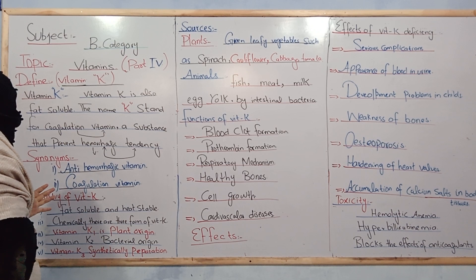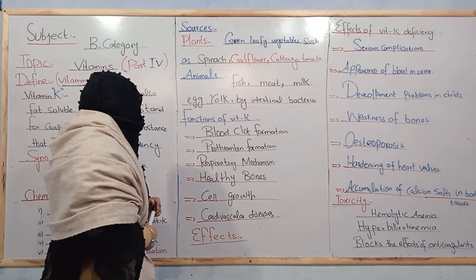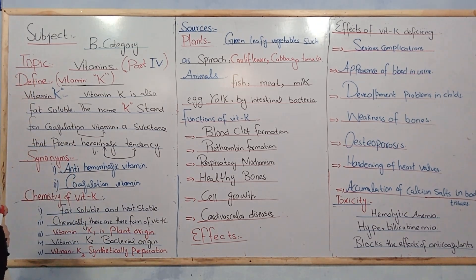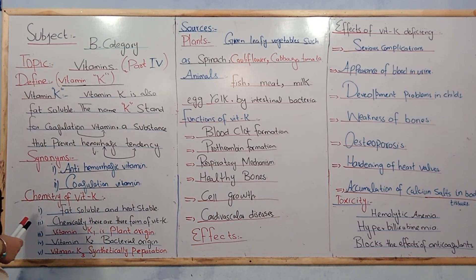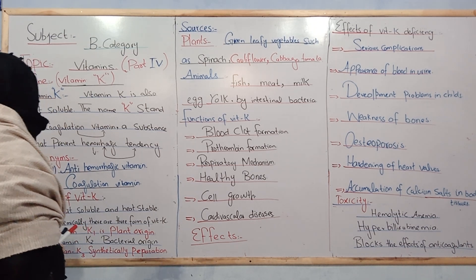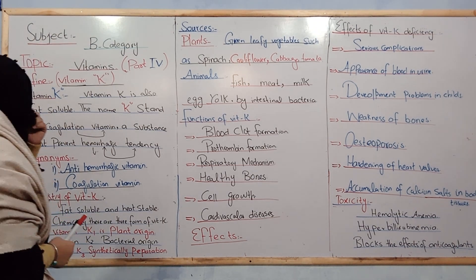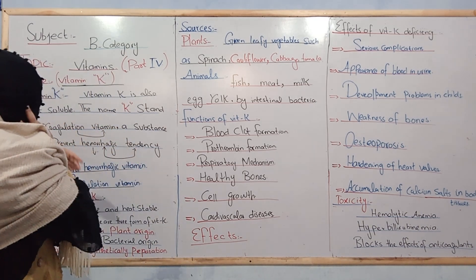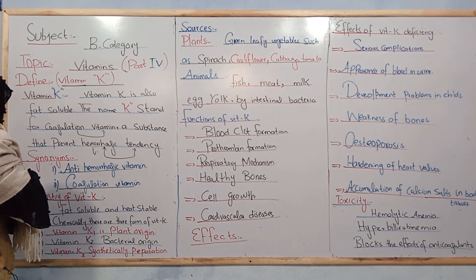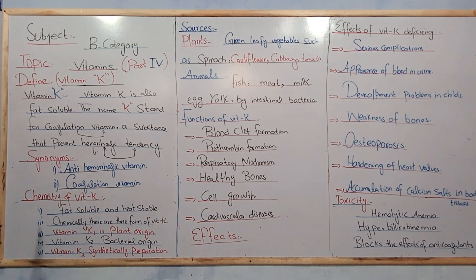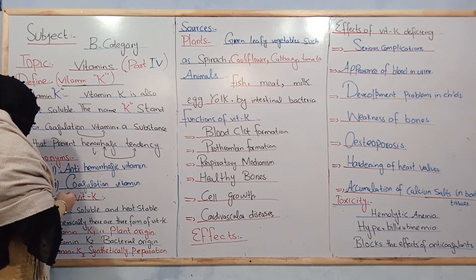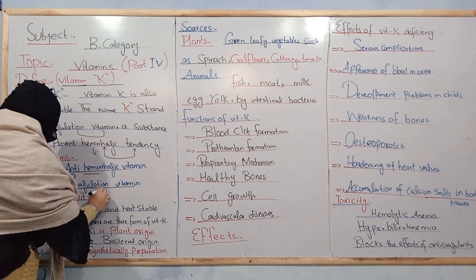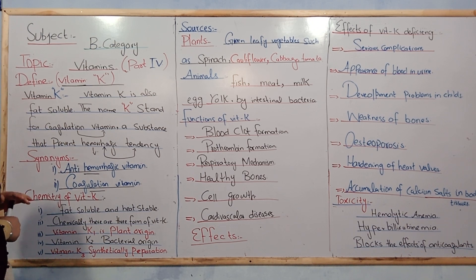We will discuss the name of vitamin K. The letter K stands for coagulation vitamin — that is, a coagulation vitamin. It is a substance that prevents hemorrhagic tendency. There are two main synonyms of vitamin K: first, anti-hemorrhagic vitamin, and second, coagulation vitamin.